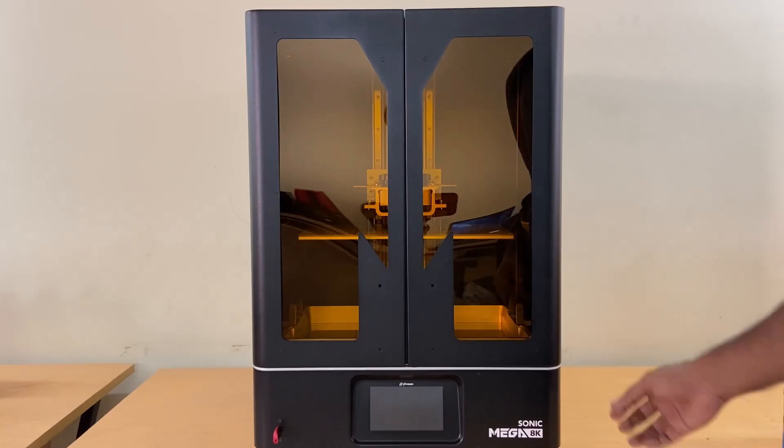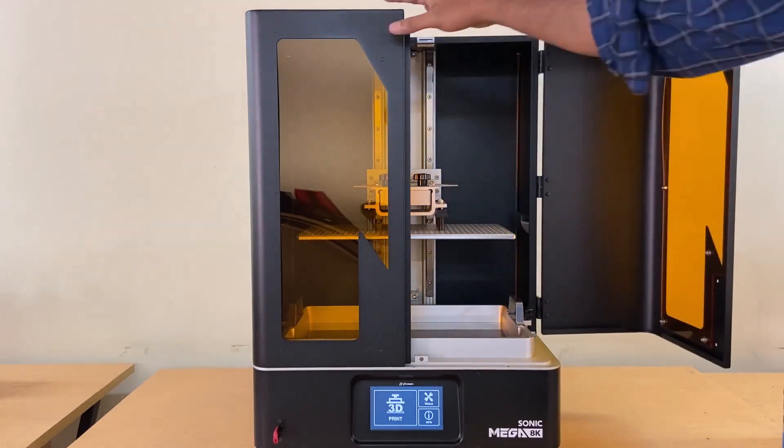To 3D print the model, load the 3D model on the pen drive in CTB format after slicing from ChituBox software.